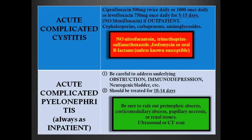Acute complicated pyelonephritis almost always requires admission. You must address the underlying cause — obstruction, renal stones, immunodepression, neurogenic bladder — and treat for 10 to 14 days. If the patient does not respond in the first 48–72 hours, rule out perinephric abscess, corticomedullary abscess, papillary necrosis, and renal stones. CT scan is very sensitive and specific, especially for renal stones.